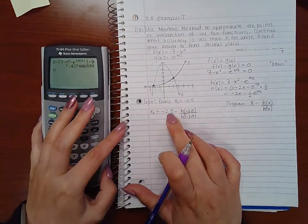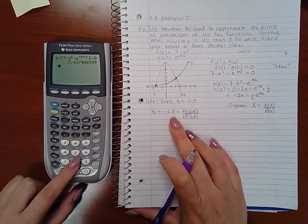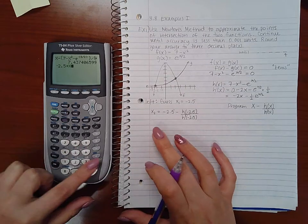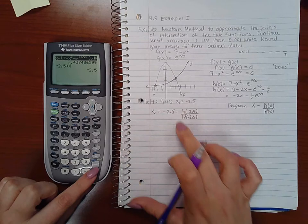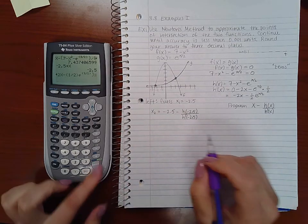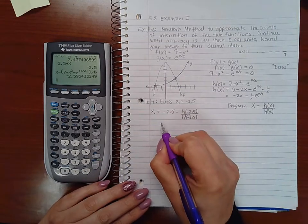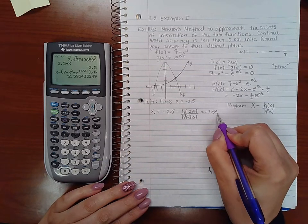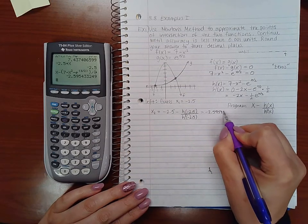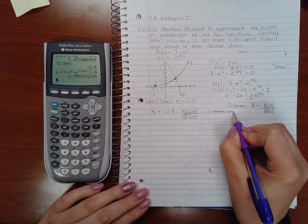Now I'm going to ignore the first value because I don't remember what was stored in for x last. But I am going to plug in negative 2.5. So negative 2.5 store as x, and if I plug it in here, it's basically going to calculate this for me. So I'm going to hit enter, and I get negative 2.595433249.